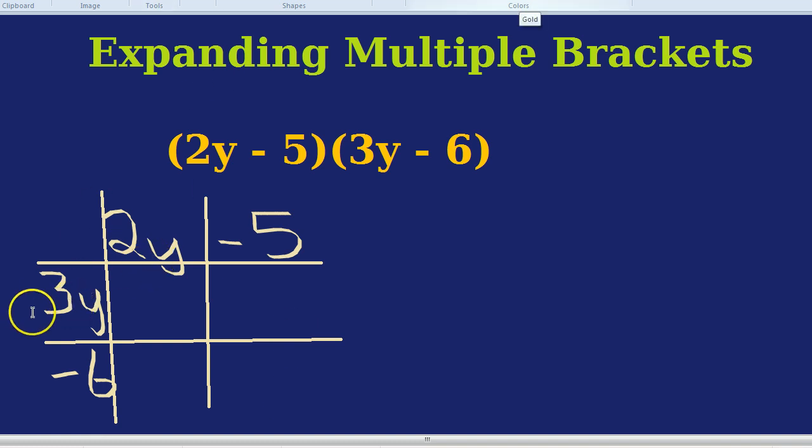Right. 2y times 3y, first, let's do the numbers. 2 times 3 is 6, and y times y is y squared. So that's 6y squared. Minus 6 times 2y, or minus 6 times 2 is minus 12, and the y is on its own, so it's just minus 12y.